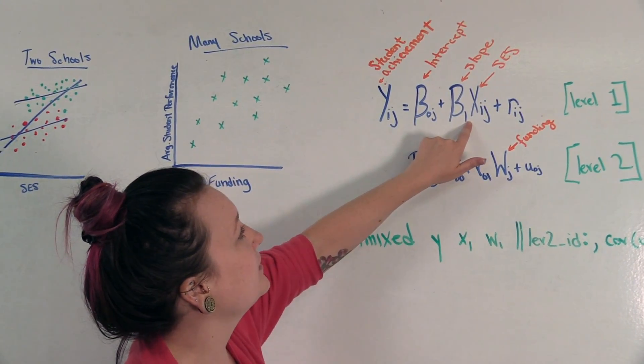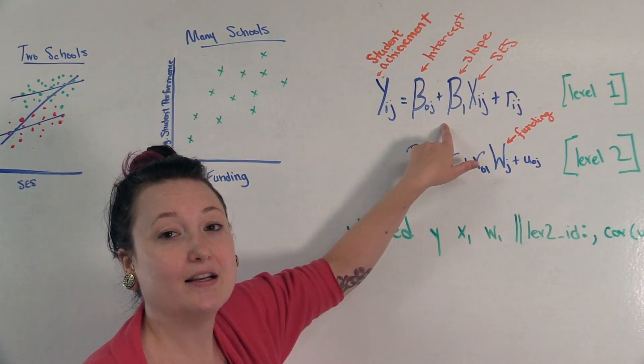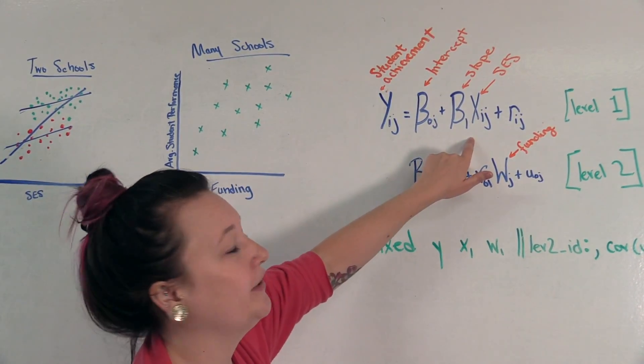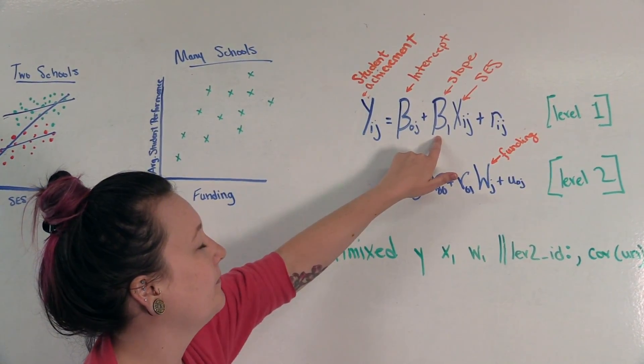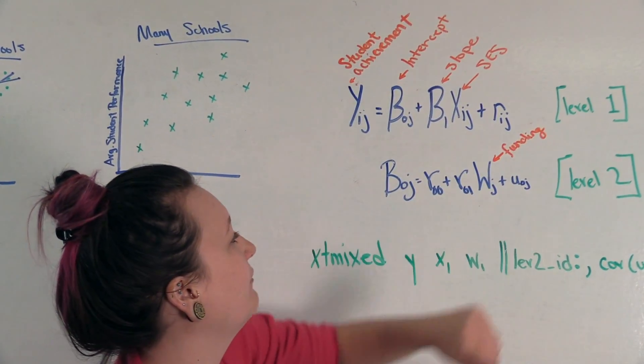Then we're going to assume that all level one predictors are fixed. That is, that they're consistent across units. And so we're going to pool everyone at level one and use everyone's SES to predict the slope. And we also have an error variable, an error measure for level one.